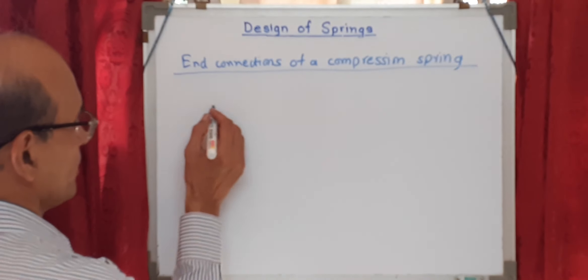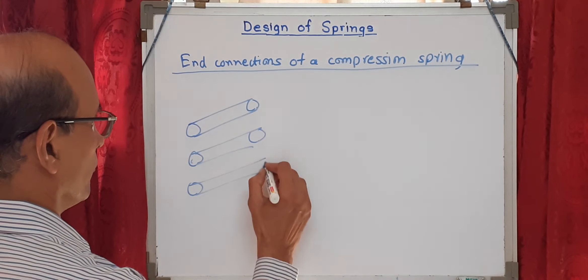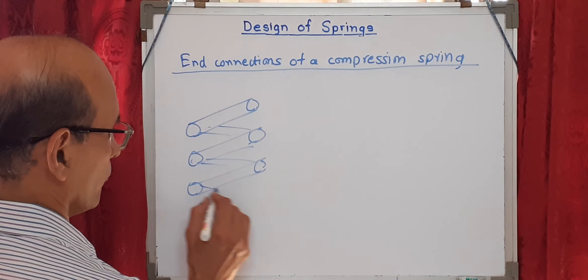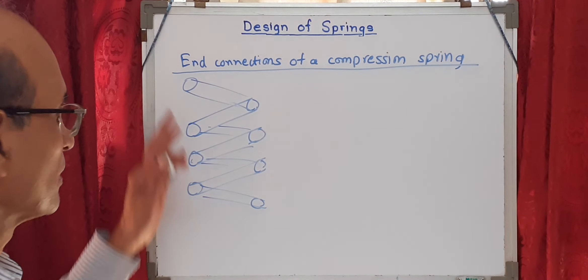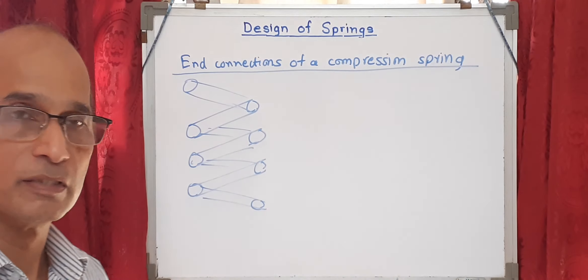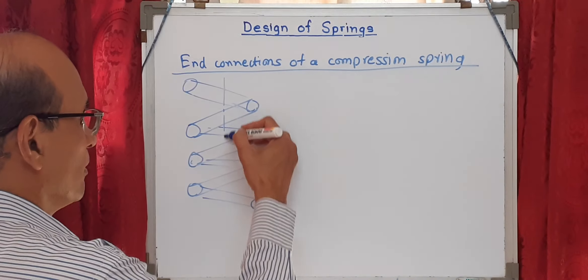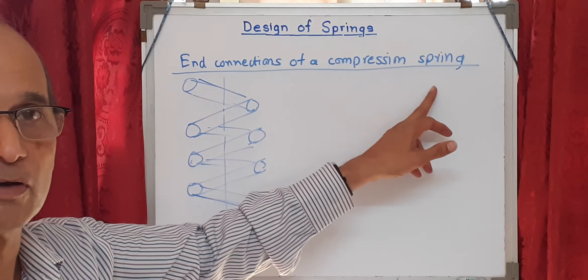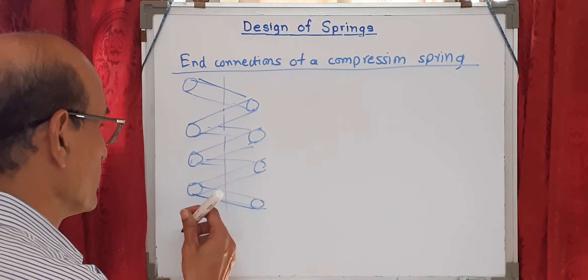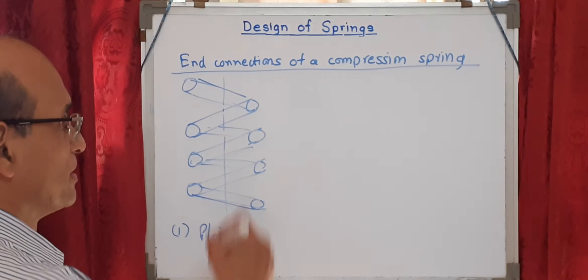End connections of the compression spring. If you have a raw spring with no modification to the ends, it is very difficult to assemble because the axis of the spring is straight but the ends are inclined. It's not possible to fit such springs in machines, so the ends must be modified. The first type — with no modification — is called a plain end spring.